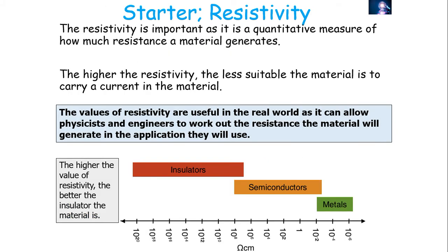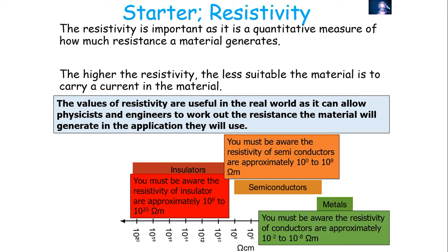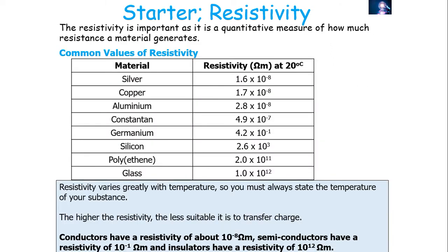The higher the resistivity, the less suitable the material is to carry a current. Insulators have resistivities from 10⁸ to 10²⁰ ohm-metres; semiconductors from 10⁰ to 10⁸ ohm-metres; and conductors like metals from 10⁻² to 10⁻⁸ ohm-metres. For example, metals like silver and copper are around 10⁻⁸ ohm-metres at 20°C; silicon is around 10³ ohm-metres; and insulators like glass or polythene are around 10¹¹ to 10¹² ohm-metres at 20°C.